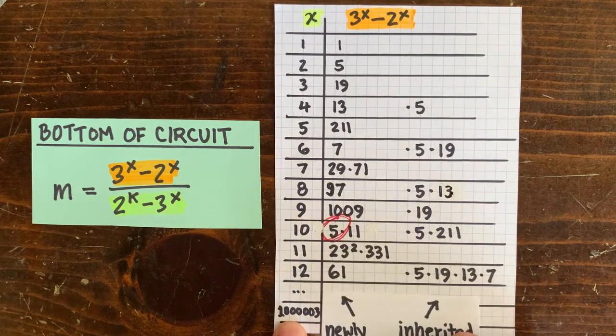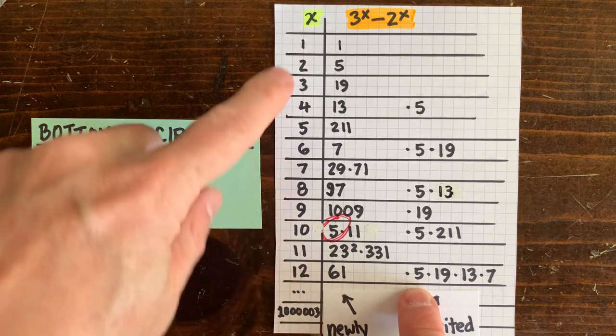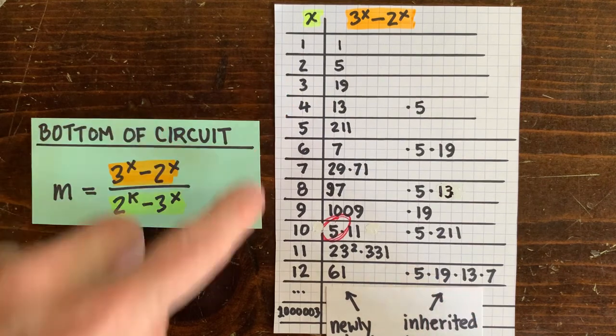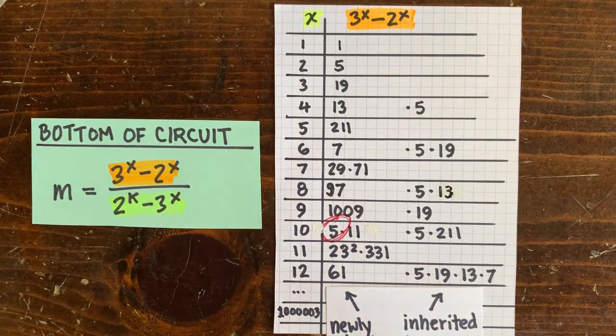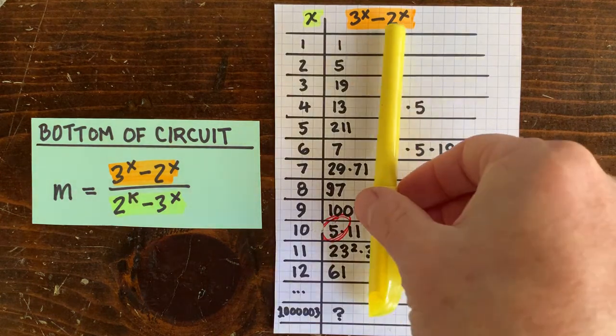For x equals 12, we inherit factors from all the divisors of 12. So we get this 5 from x equals 2, the 19 from x equals 3, and so on.